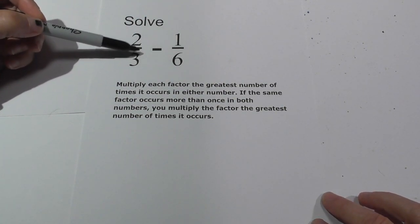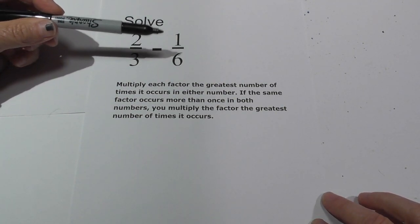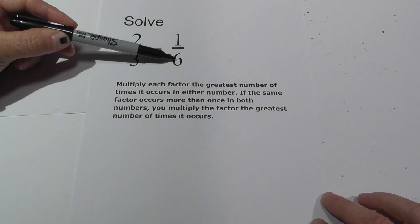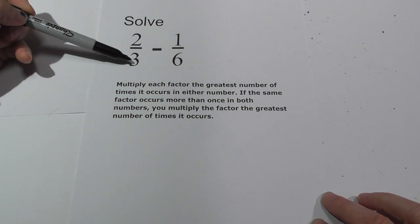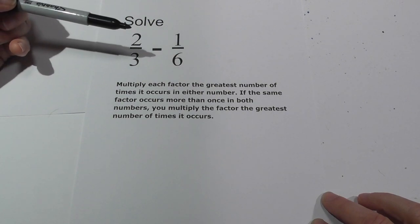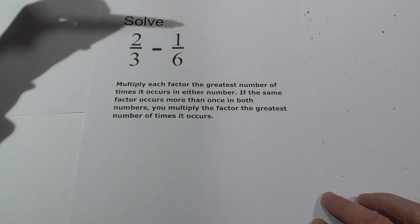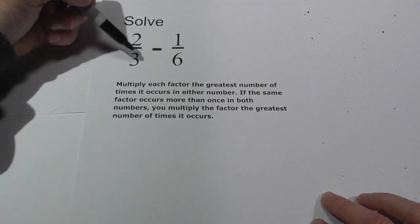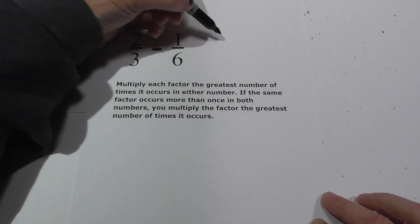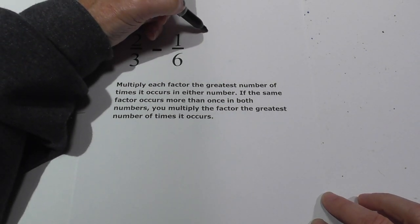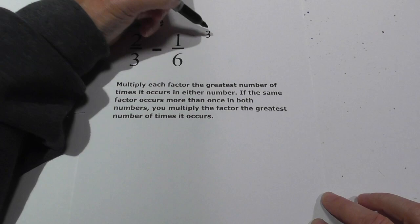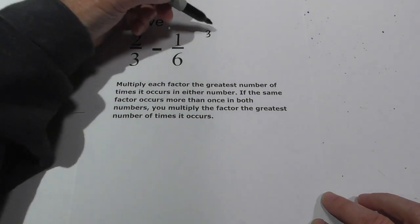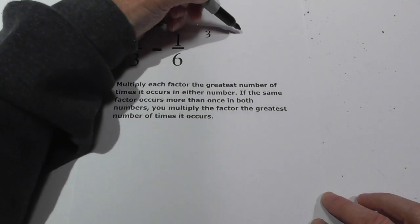First thing you need to do is find a common denominator. A common denominator is a number that both six and three will divide into evenly. I like to use prime factorization, so that's what I'm going to do. First I'm going to complete a factor tree. For three, that does not take very long because three is prime.